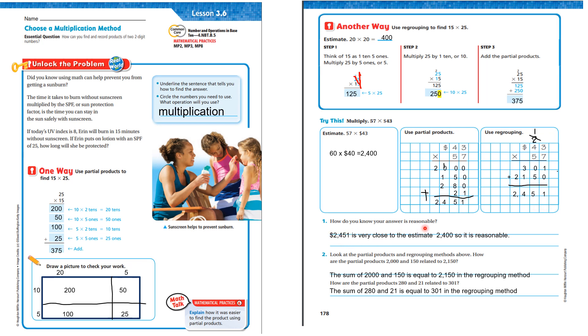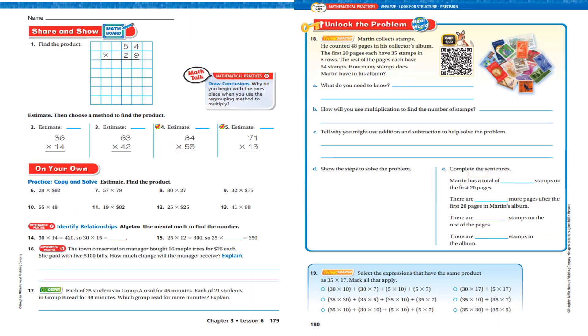How do you know your answer is reasonable? 2,451 is very close to the estimate of 2,400, so it is reasonable. Look at the partial products and regrouping method above. How are the partial products of 2,000 and 150 related to 2,150? The sum of 2,150 is equal to 2,150 in the regrouping method. How are the partial products 280 and 21 related to 301? The sum of 280 and 21 is equal to 301 in the regrouping method.